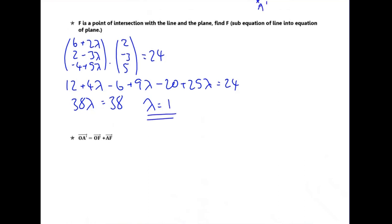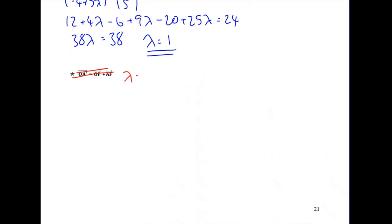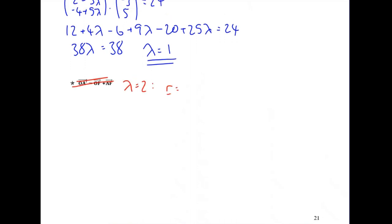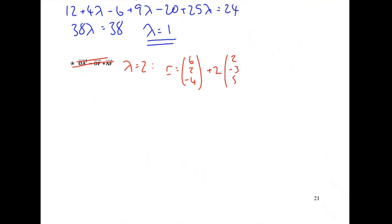I'm not going to work out the coordinates of F. Instead, I use the fact that to get from A to F I've gone along lambda = 1 along the straight line. To get to A dash, I go the same distance again — another lambda = 1 — so I substitute lambda = 2 into the equation of the straight line. That gives R = (6, 2, minus 4) + 2·(2, minus 3, 5) = (10, minus 4, 6). That's the position vector of A dash.